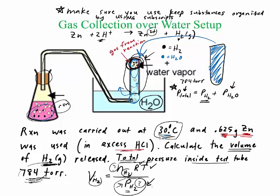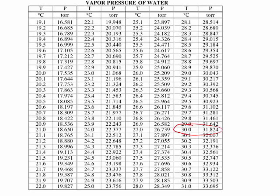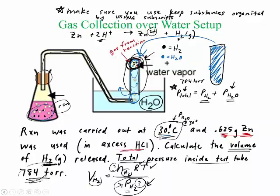I Googled around and found a chart of vapor pressure. Vapor pressure of water is a function of temperature. I want to know what the pressure of water is at 30 degrees Celsius. From this table, I see that at 30 degrees Celsius, the pressure of water is 31.8 torr. I'm just going to use three sig figs. So this number is 31.8 torr. If I solve for the partial pressure of H2, it would be 784 minus 31.8, which equals 752 torr.